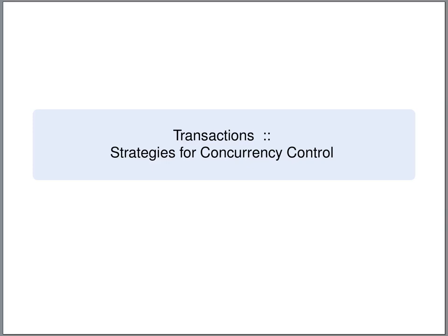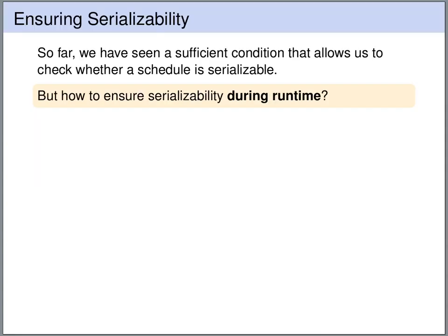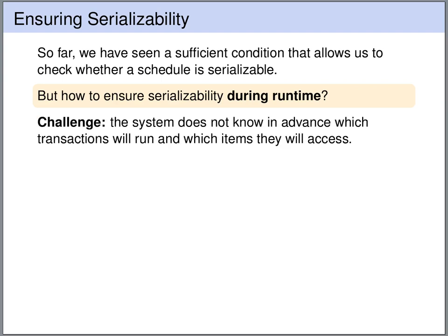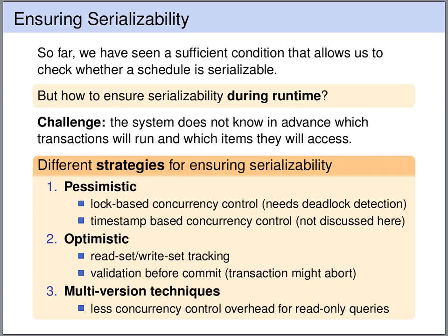Let's have a look at different strategies for concurrency control. These are strategies employed by the database management system to ensure serializability of the transactions during runtime. So far we have seen how to check whether a schedule is serializable, assuming we know all the transactions and actions. However, how do we ensure serializability during runtime? This is challenging because the system does not know in advance what transactions will run, what actions they perform, and what items they will access. So we need different strategies for ensuring serializability on the fly.